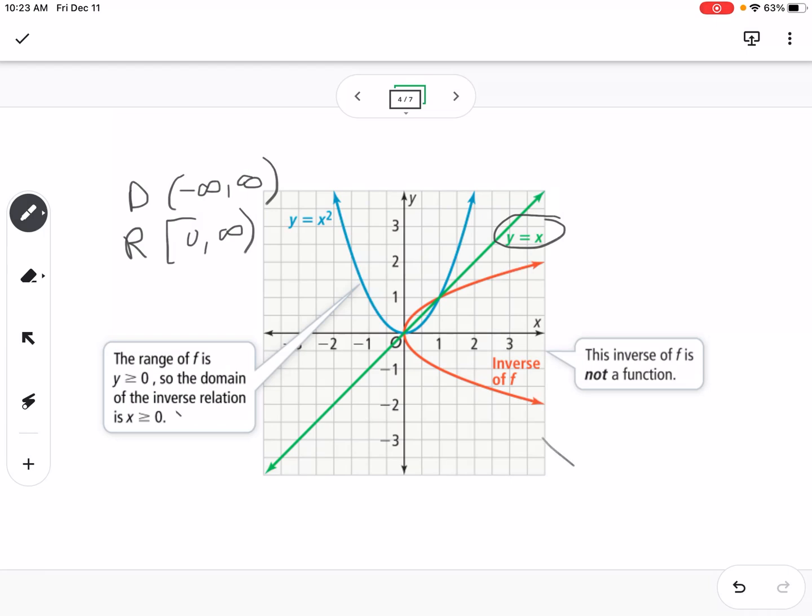So if you go over to your inverse, those are going to flip. So the domain is now going to be from 0 to infinity, and you can see that's true because our graph is only going to be on the right side of our graph, and the range would be from negative infinity to positive infinity.